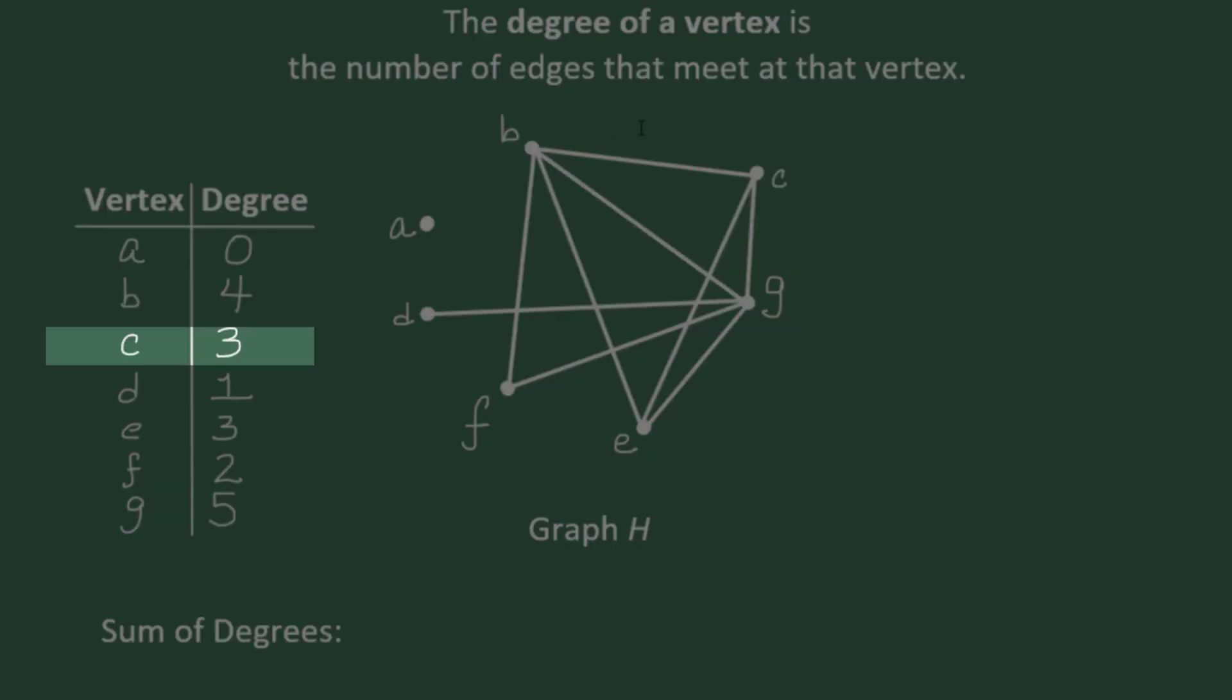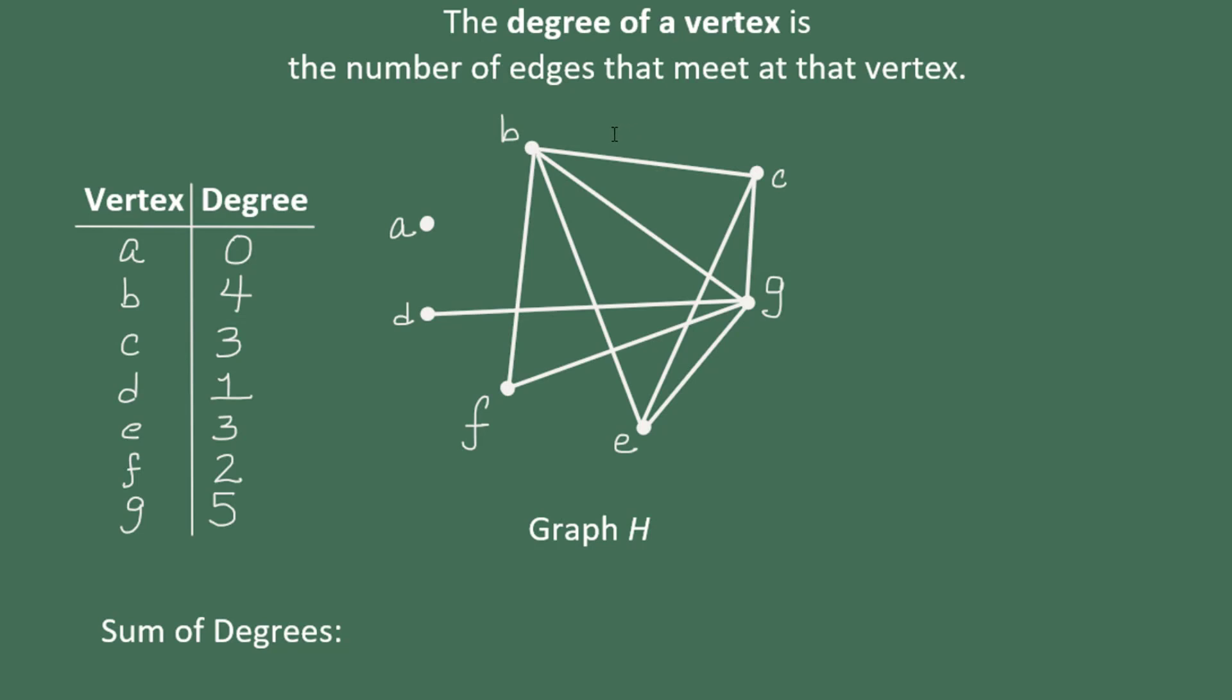What we're going to do next is to find the sum of the degrees. So we're going to add zero plus four plus three plus one plus three plus two plus five. Zero and four is four, plus three is seven, plus one is eight, plus three is eleven, plus two is thirteen, plus five is eighteen.